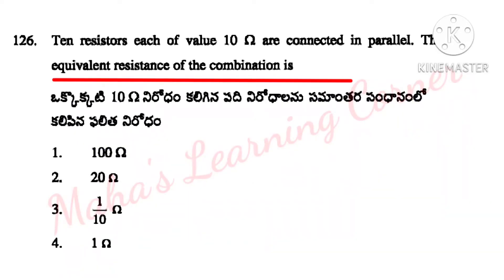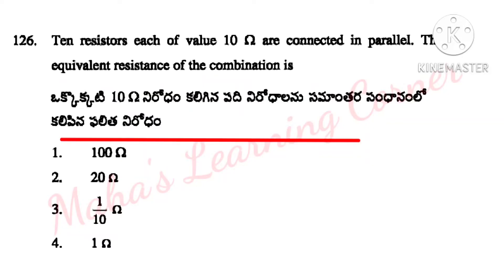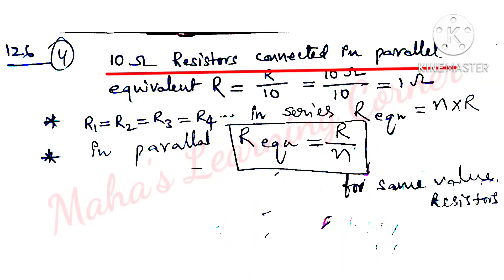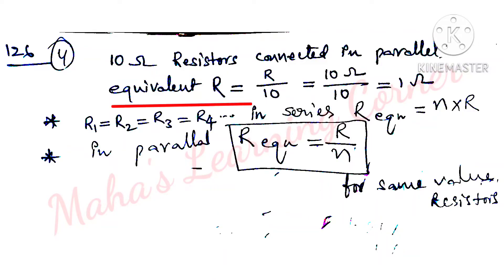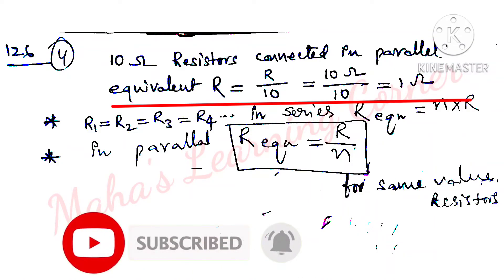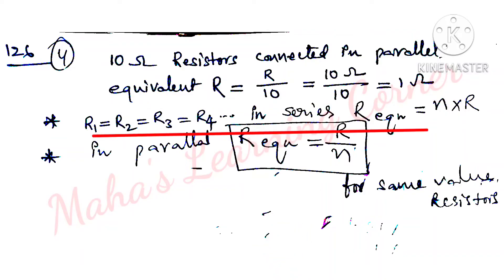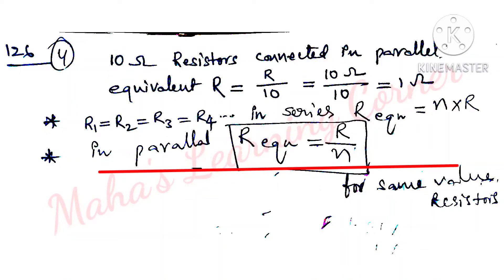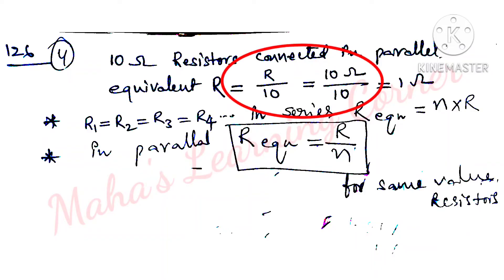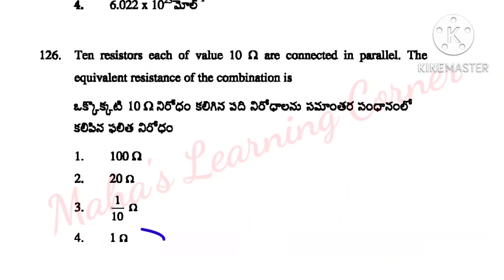10 resistors, each of value 10 ohms, are connected in parallel. The equivalent resistance of the combination is? Options: 100 ohms, 20 ohms, 1/10 ohm, 1 ohm. For same-value resistors in parallel, equivalent resistance is R by N. So 10 ohms divided by 10 equals 1 ohm. Option 4 is the correct answer.